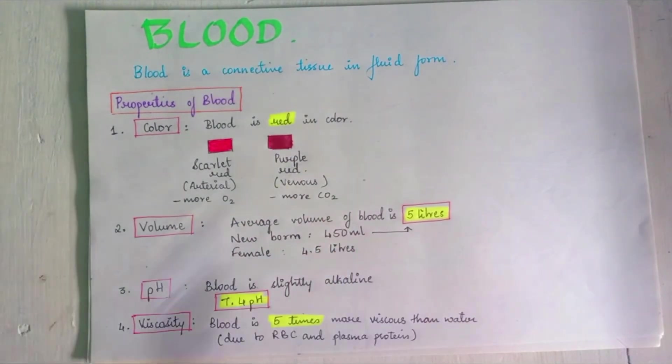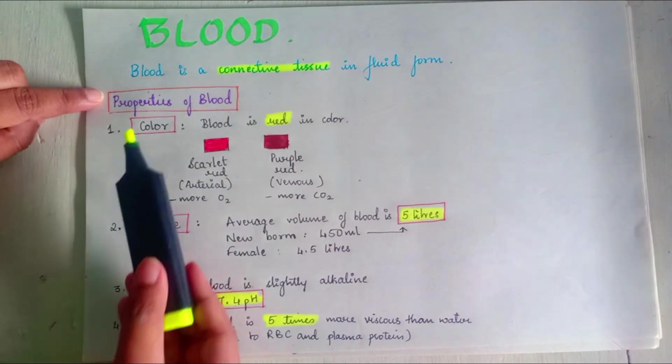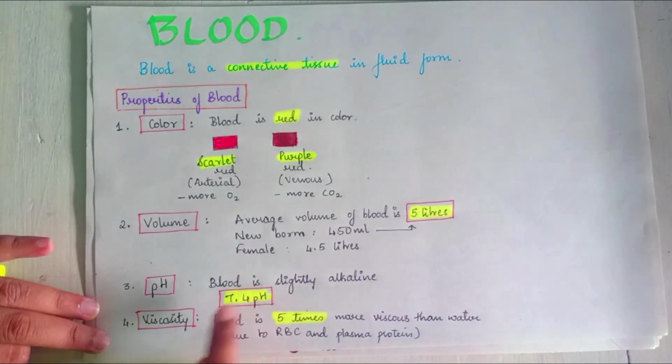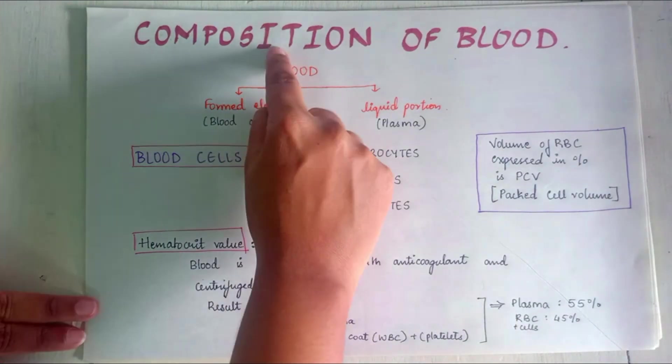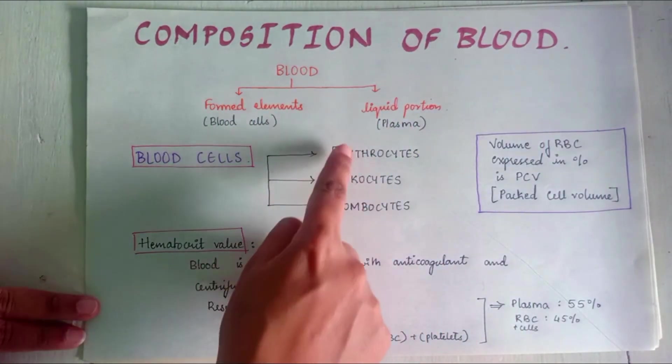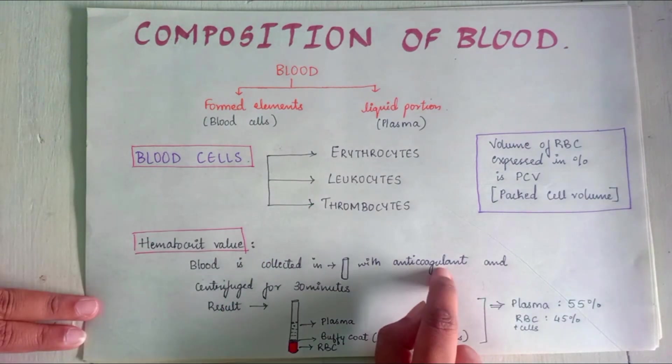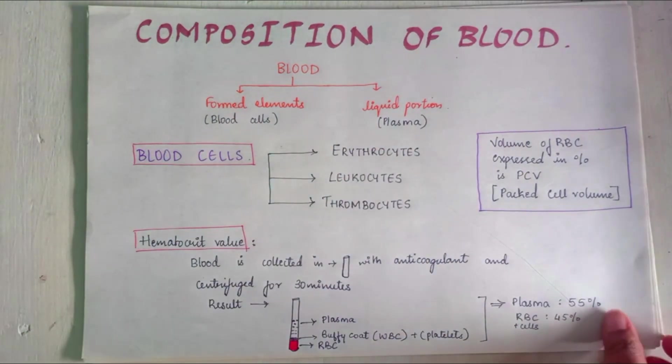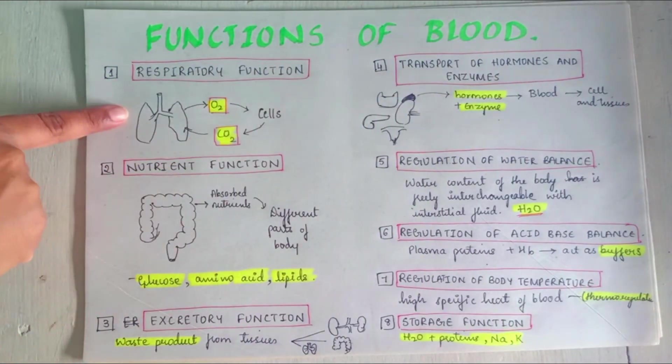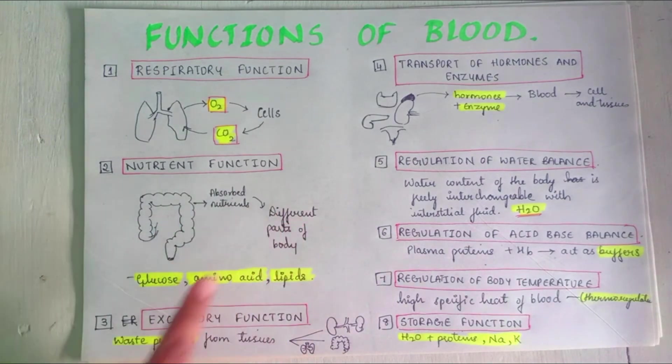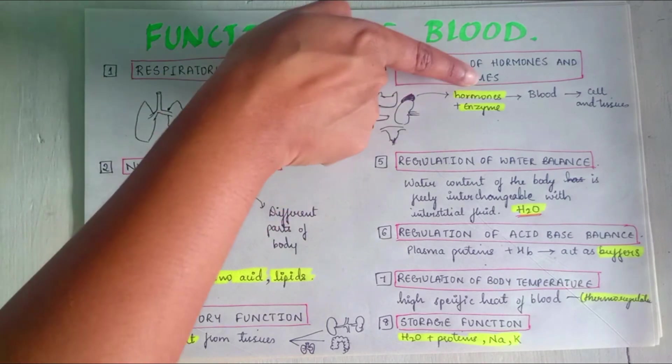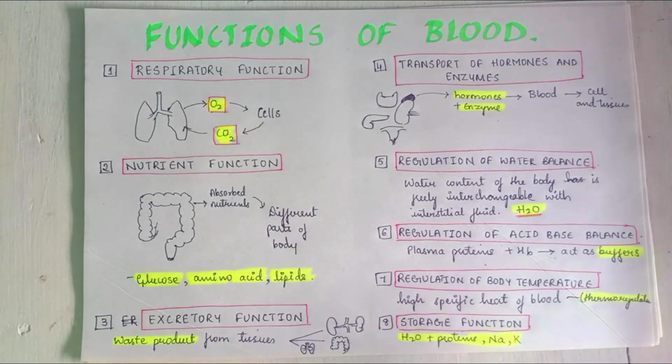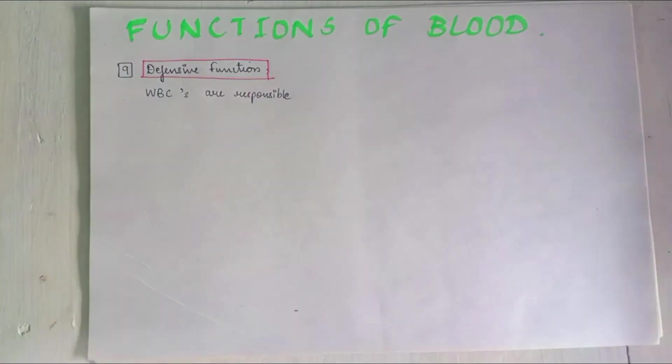Let's do a quick revision. Blood is a connective tissue. Properties of blood are color: it is red in color, scarlet red and purple red. Volume is 5 liters. pH is 7.4. Viscosity is 5 times. Composition of blood: Blood is formed blood cells and plasma, that is erythrocytes, leukocytes, and thrombocytes. Plasma is 55%, RBC is 45% and packed cell volume is the percentage of RBCs. Functions of blood: Respiratory function, nutrient function, excretory function, transport of hormones, regulation of water balance, regulation of acid-base balance, regulation of body temperature, storage function, and defensive function.